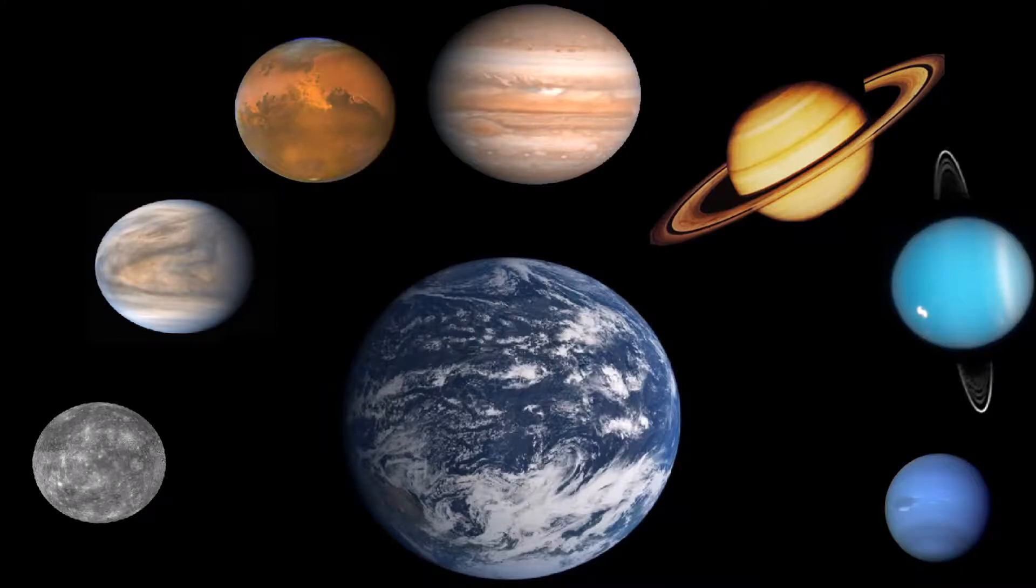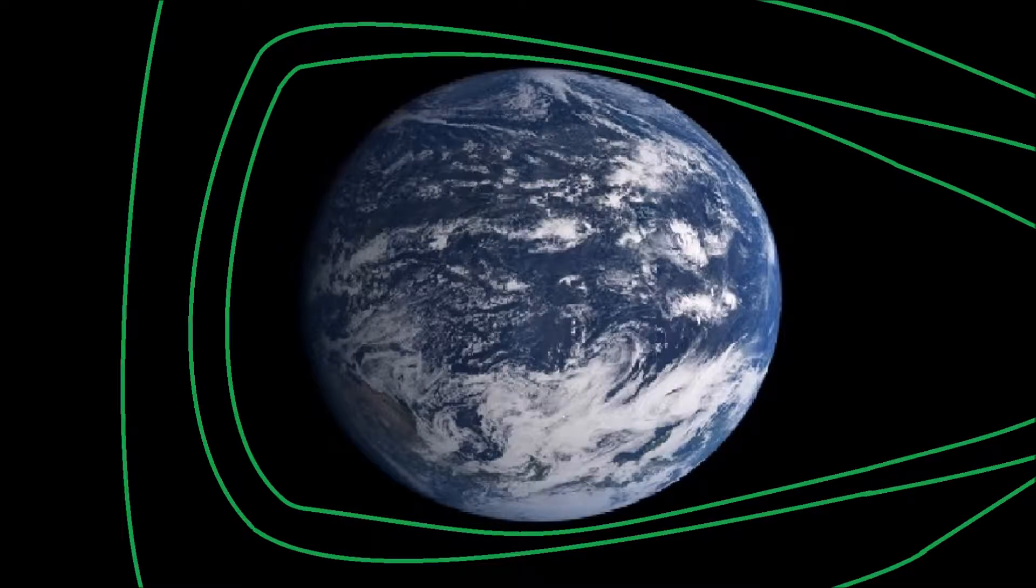Earth is the densest planet in the solar system. This is because Earth has a heavy iron core. Earth's iron core is famous for providing a protective magnetic field around the planet. But how do we really know that Earth has an iron core?